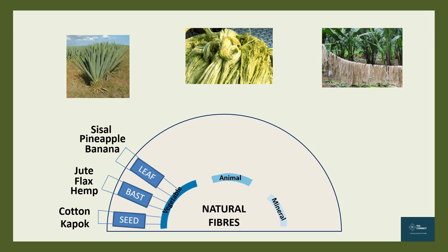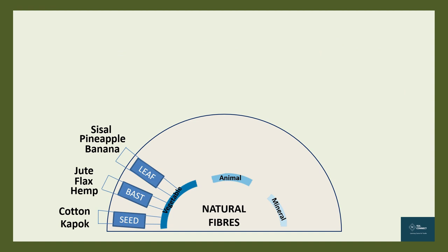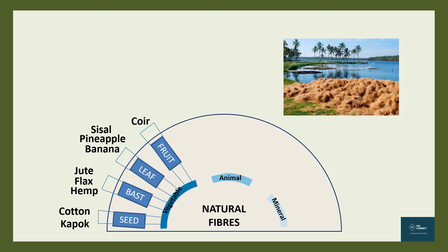The next one is fruit fibers. The husk in which a fruit is encased is sometimes fibrous. The fruit that produces a fibrous husk is the coconut — its husks are fibrous and produce coir fiber. India and Sri Lanka are the largest producers of coir fiber.